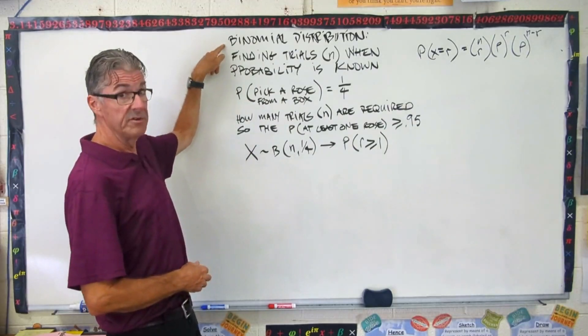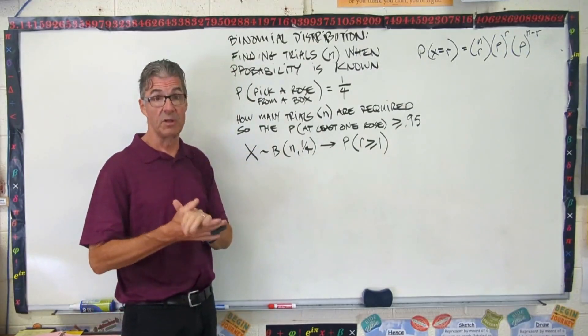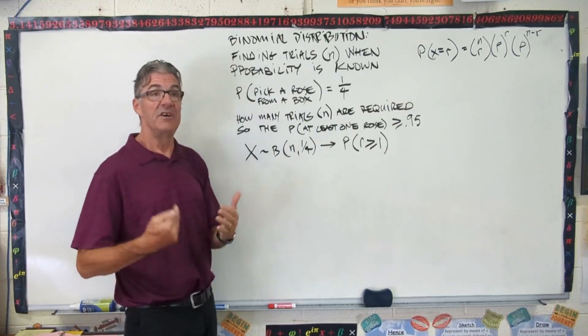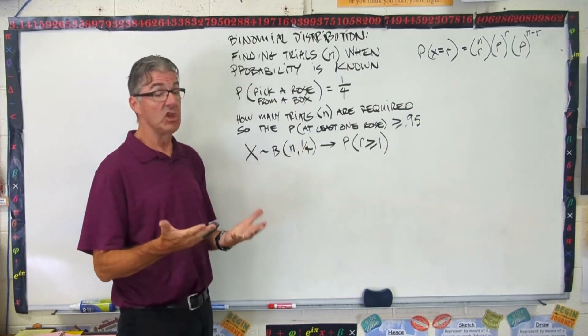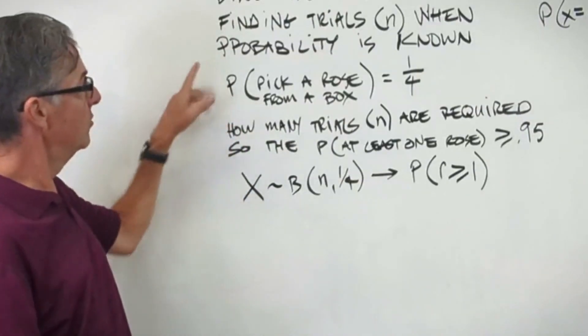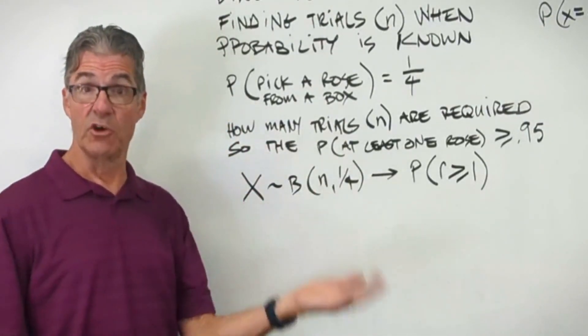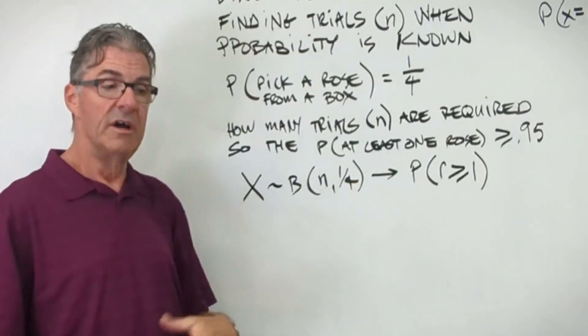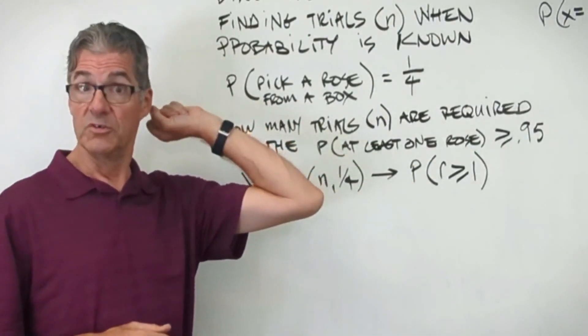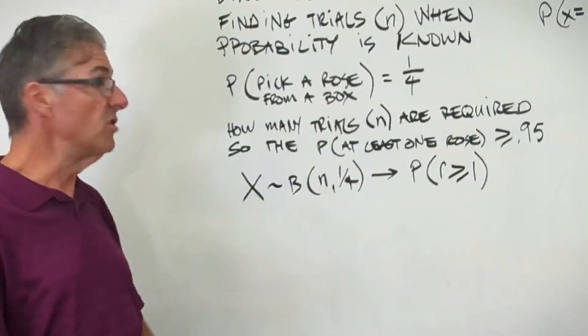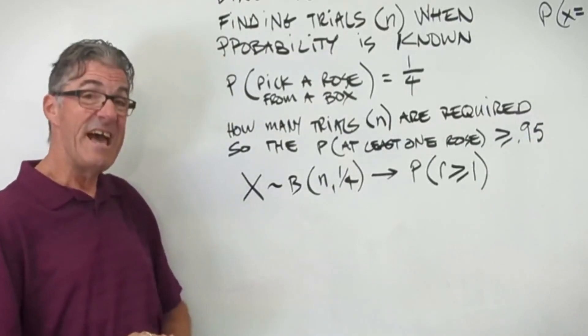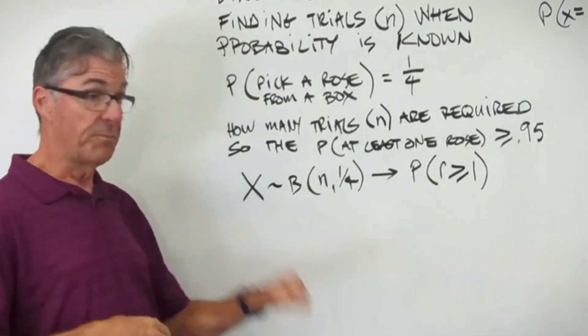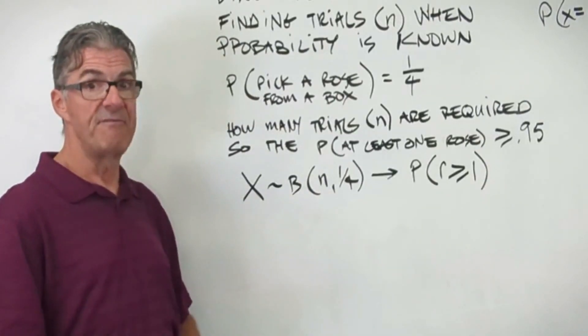Today's lesson covers the binomial distribution with an interesting type of problem. This is when you know the probability and you need to find the number of trials necessary to achieve that probability. We've got a box of flowers with roses and other kinds. The probability of picking a rose from the box is one quarter. How many trials are required to get a 0.95 probability of getting at least one rose? You're going to have to pick more than one flower to achieve that 0.95 probability.